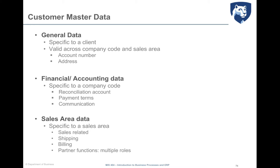Finally, sales area data related to the customer master are specific to a particular sales area, made up of one sales organization, one distribution channel, and one division — because the customer needs to relate to one channel, one specific product, and one sales organization. These data can be specified in terms of sales-related, shipping, billing, and partner functions, which we'll deep dive on in the following slides.